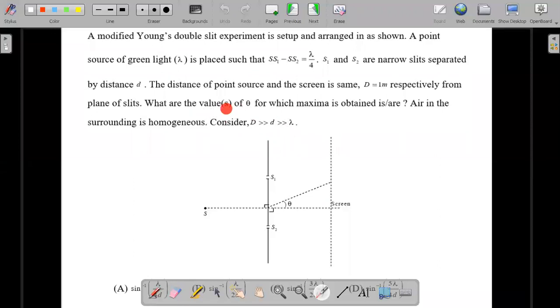What are the values of theta? The theta is measured from this particular line for which maxima is obtained. So it's one or more than one answer may be right and the usual conditions of the YDSE that the surrounding air is homogeneous and capital D which is the distance between the screen and slits is very large compared to small d, and in turn that is very large compared to the wavelength which is a very important condition required for the YDSE fringes to form.